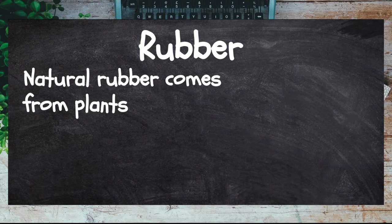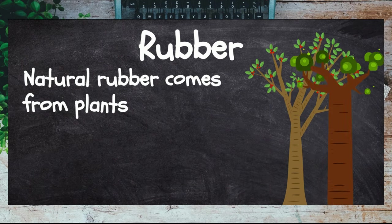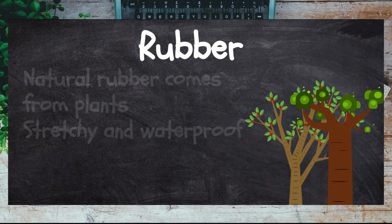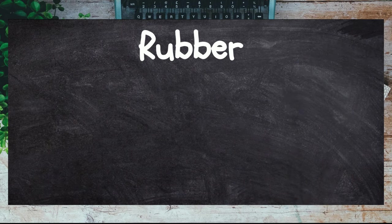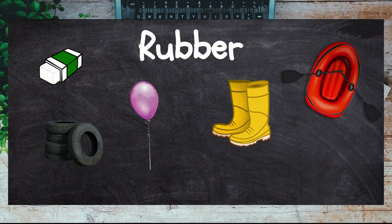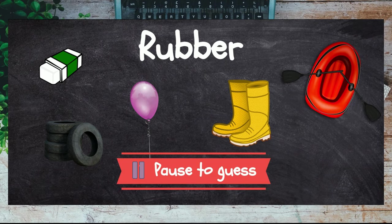Rubber can be made from a number of different things; natural rubber comes from plants. Rubber is durable, stretchy, and waterproof, so it is good for things such as erasers, boots, balloons, tires, and floaties. Can you name any more rubber items?